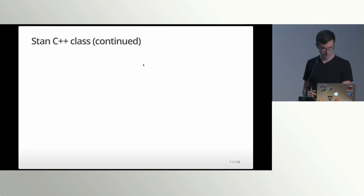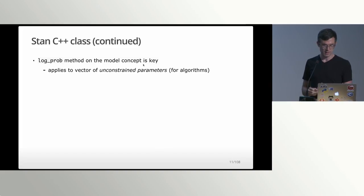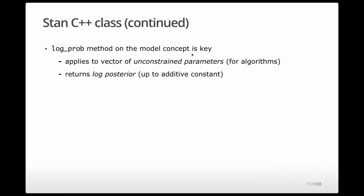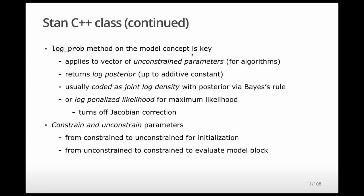The model gets constructed with data. When you declare data in a Stan program, it gets read once in the model constructor and then saved as part of an instance of that model class, and then used over and over again later. The log prob method is the main entry point — it applies to a vector of constrained parameters and returns the log posterior up to some constant. The key point is that the log prob function is operating on the constrained space.